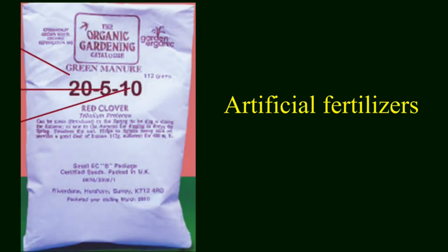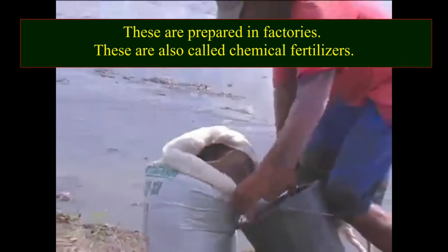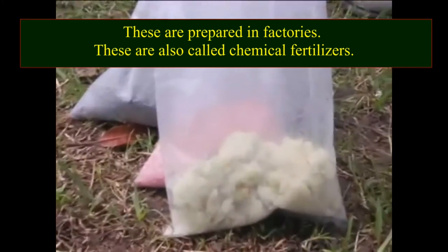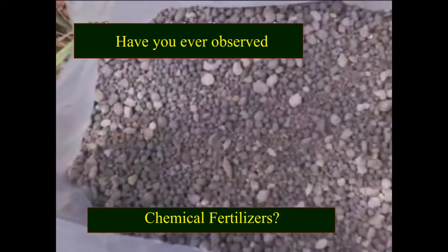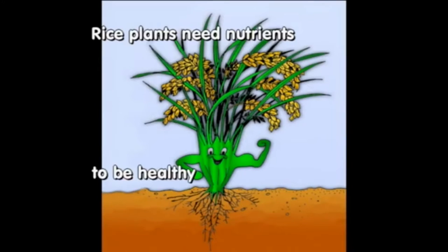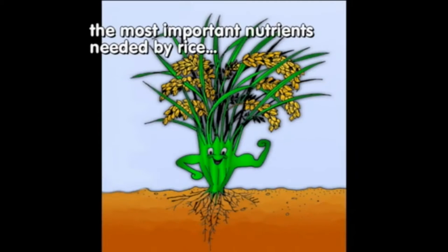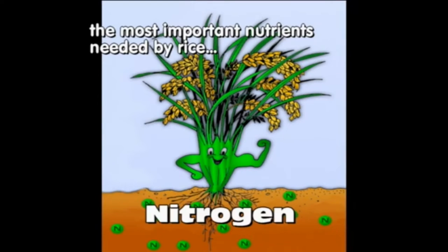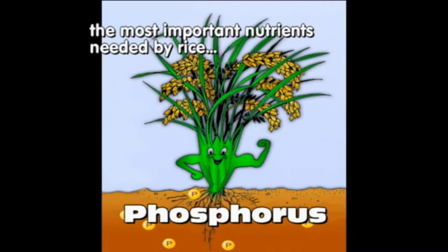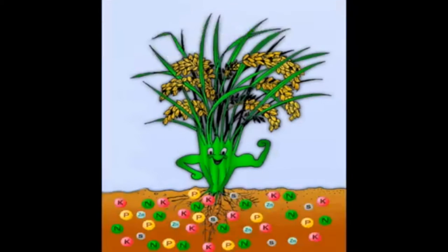Artificial fertilizers are prepared in factories and are also called chemical fertilizers. Rice plants need nutrients to be healthy and produce a profitable yield. The most important nutrients needed by rice are nitrogen, phosphorus, potassium, zinc, sulfur, etc.